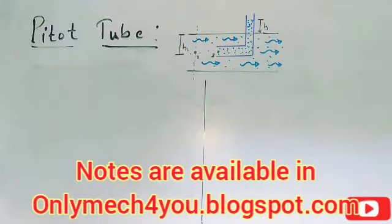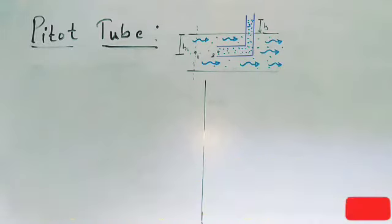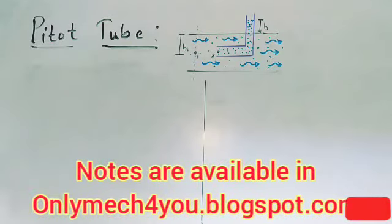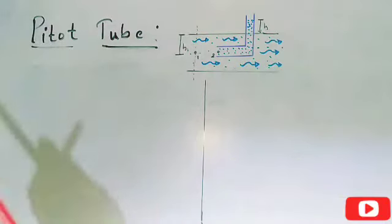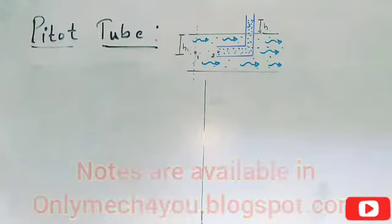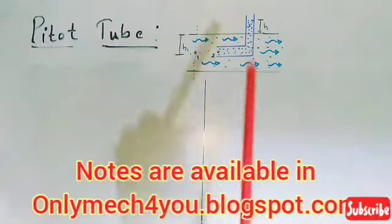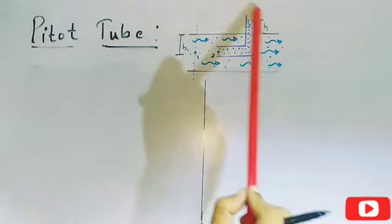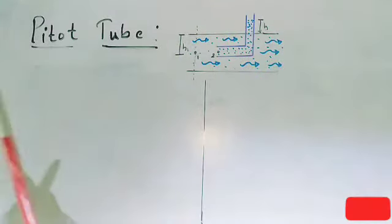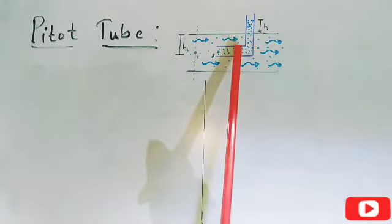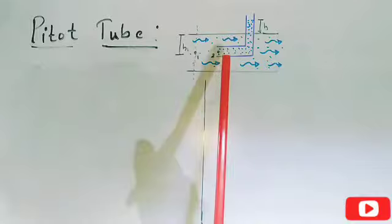In the previous video we discussed the orifice meter and some numericals on it. Today we are going to derive the equation to determine velocity using a pitot tube. A pitot tube is a device used to measure the velocity of flow at any point in a pipe or a channel. This figure you are observing is a schematic diagram of a pitot tube, which consists of a glass tube bent at a right angle — shown by the blue color line.